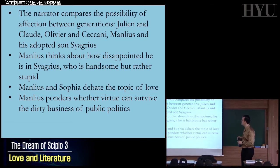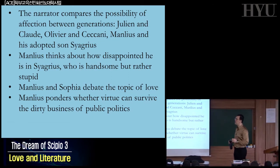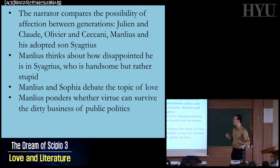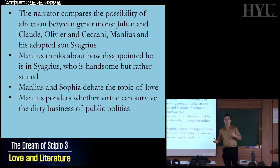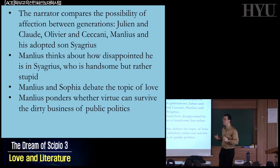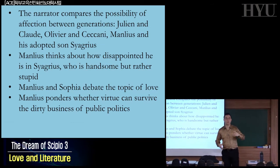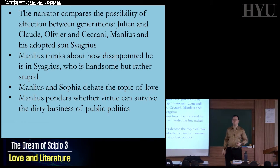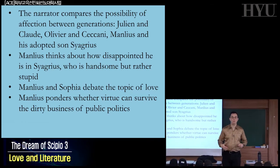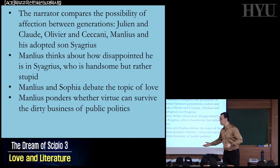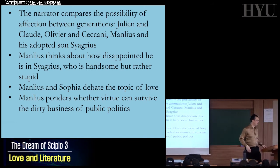At the end of that section, we see Manlius and Sophia have a debate about the topic of love, bringing in all sorts of famous authors. Then at the very end, Manlius leaves hanging a very interesting question: can virtue survive the nasty business of politics? Is it possible to do something bad for the sake of doing something good? This is a classic ethical dilemma — like, if you could go back in time, would you kill Hitler to save all the people who died in World War II? Is it okay to kill one person to save millions?